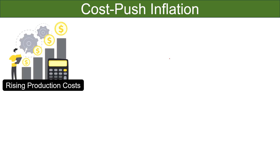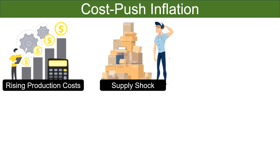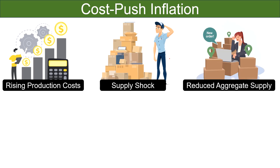Talking about the components of cost-push inflation: rising production cost. Cost-push inflation is driven by an increase in the cost of production. This can include higher costs of raw materials, labor, energy, or other essential inputs that businesses need to produce goods and services. External factors such as geopolitical events, natural disasters, or disruptions to the supply chain can lead to a sudden reduction in the availability of key inputs — a supply shock that triggers a rapid increase in production cost. When the cost of production rises significantly, businesses may choose to produce less, leading to a reduction in aggregate supply, which puts upward pressure on prices.